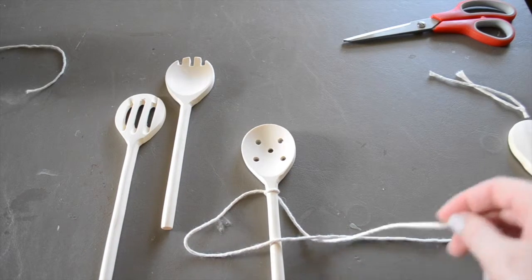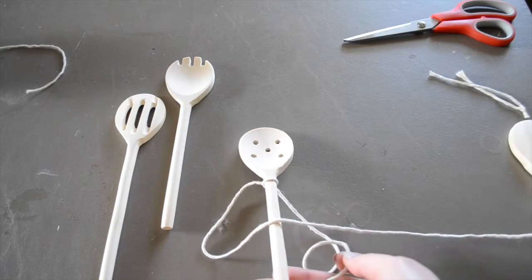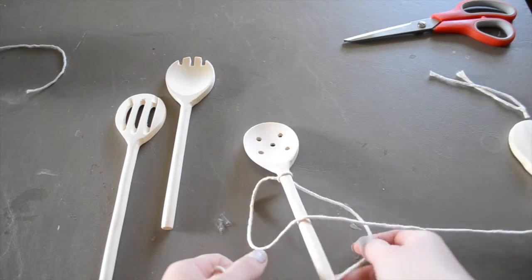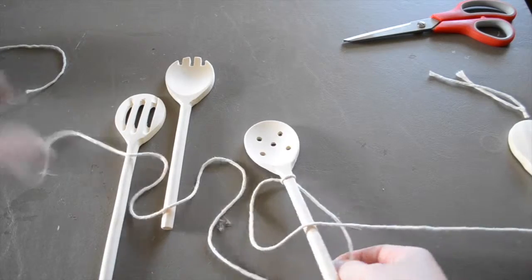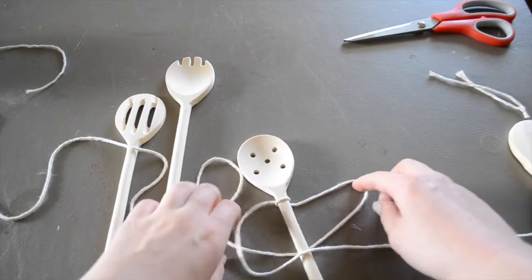Then with the piece on the right side, you're going to make a four going in the opposite direction, going under. So now I've got these two loops.